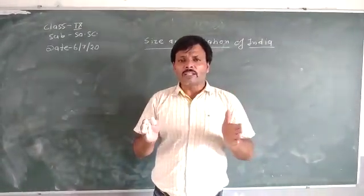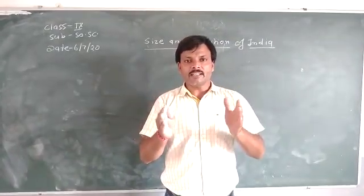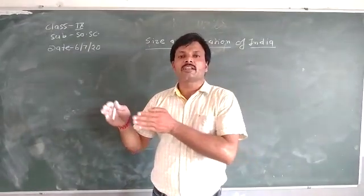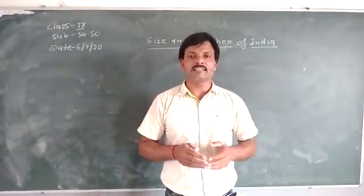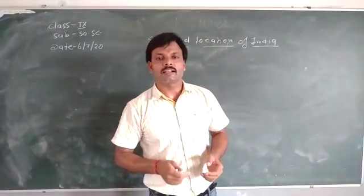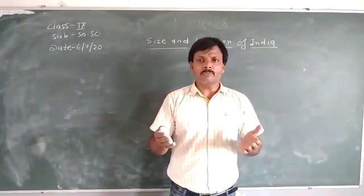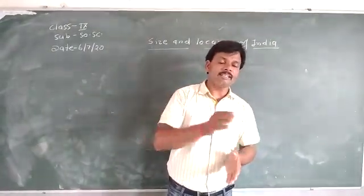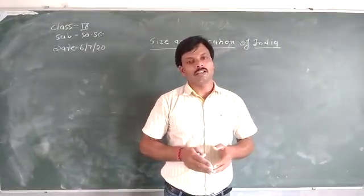The longitudinal extension of our country is 68 degrees 7 minutes east to 97 degrees 25 minutes east. And the latitudinal extension of our country is 8 degrees 4 minutes north to 37 degrees 6 minutes north. Longitude means vertical lines on the globe and latitude means horizontal lines on the globe.